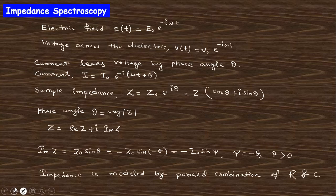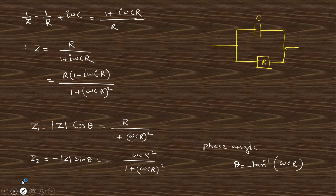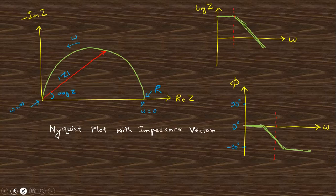Now, impedance spectroscopy is where we can measure the dielectric constant — sorry, the relaxation time — and determine the nature of the dielectric. Consider an electric field; the corresponding voltage leads by a phase angle theta. The impedance can be written accordingly. The impedance can be represented as a parallel combination of a capacitor and a resistor. Plotting this gives a circular graph; the log Z versus omega graph and the phi versus omega graph each have characteristic shapes.